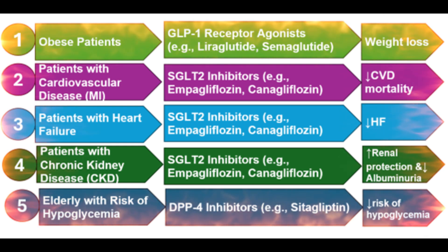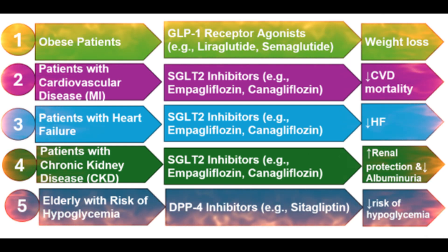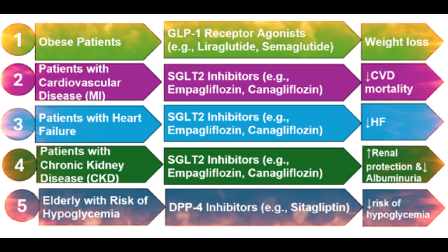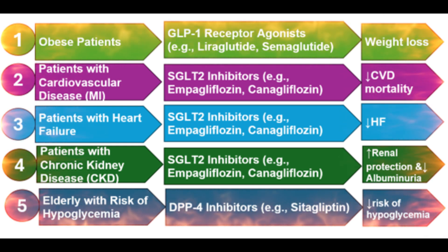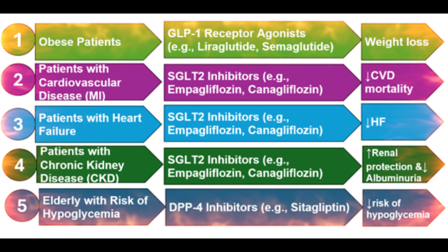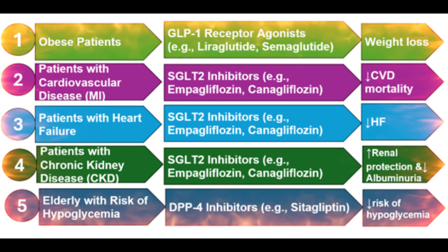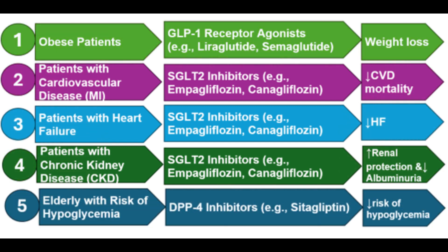Case 4 – Chronic Kidney Disease. For chronic kidney disease, SGLT-2 inhibitors like dapagliflozin and canagliflozin provide renal protection and reduce albuminuria.